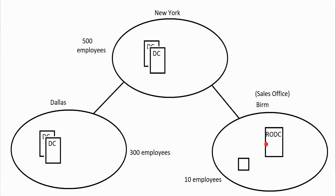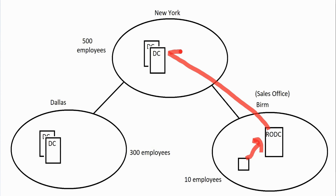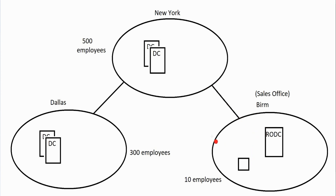Ultimately, RODC acts as a read-only domain controller that doesn't store admin credentials. If an admin visits the Birmingham office and tries to log on, RODC will use pass-through authentication — it sends the authentication request up to New York, which authenticates the user and passes it back. So anyone can still get authenticated; it's just a little slower. You could manually tell RODC to cache a certain person's password, but ideally you don't cache admin passwords since the server isn't thoroughly monitored.